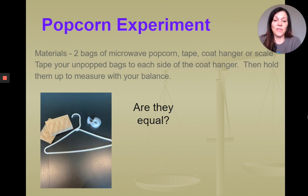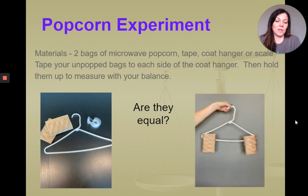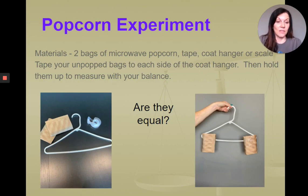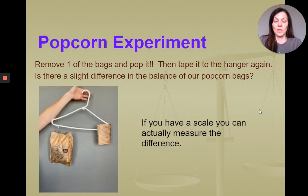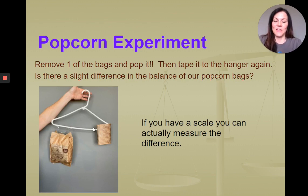The question you're asking is: are they equal? Before popping our popcorn, attach each one with tape to our coat hanger. As you can see in the picture, they are equal, and the balanced part of our coat hanger is level. So I removed one of the bags and went to the microwave and popped our popcorn. When we taped the bag to the coat hanger again, you can see that our bag of unpopped popcorn is slightly lower on one side than our popped bag of popcorn.